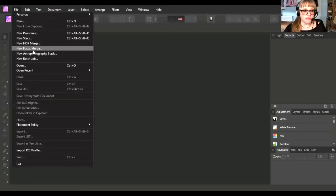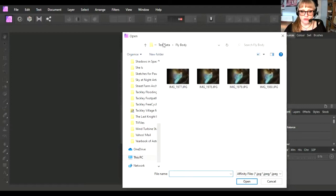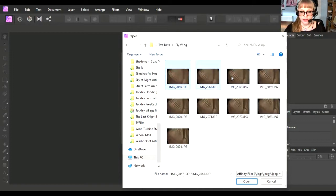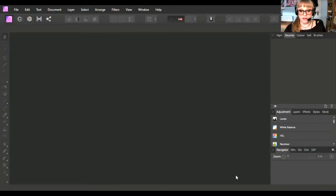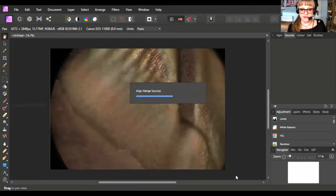At the top in Affinity, if you go up to file and do new focus merge, then you can choose the photographs that you want to do. I've got some test data ready here. This is the wing of a green bottle fly. If I just open these photographs - this isn't a lot of pictures here but it gave a really good result. It's got all of those there and then you click okay, and then the magic just kind of happens. You don't have to do any of the blending or layer masking yourself or anything like that. I've tried doing this manually in Photoshop and I always end up with stripes.